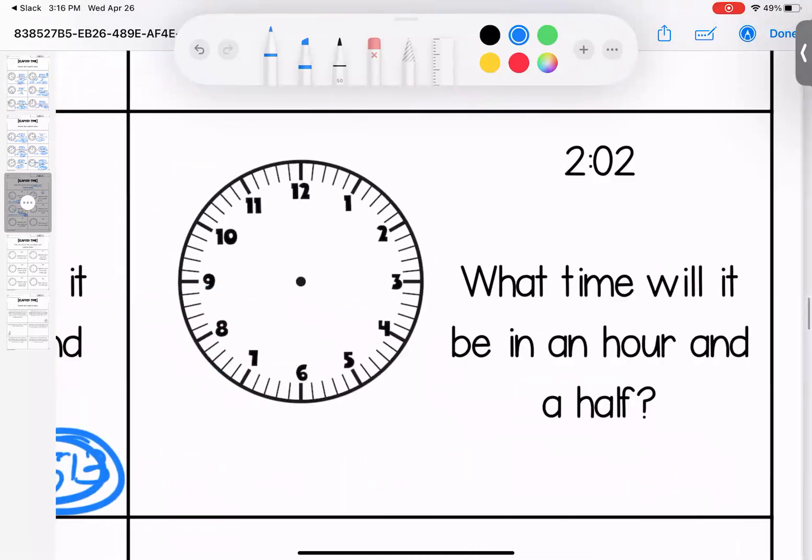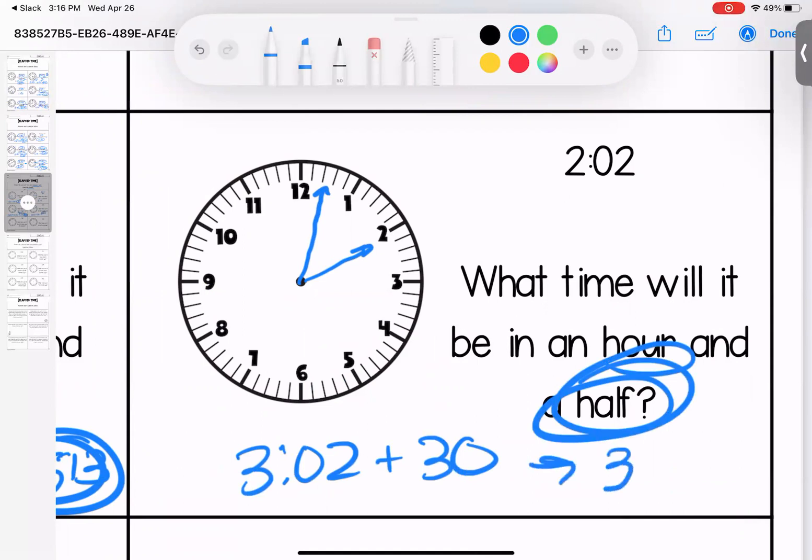Over here, what time is it? It's 2:02. What time will it be in an hour and a half? 2:02 one hour is 3:02, plus 30 minutes for the half an hour is 3:32.